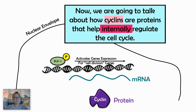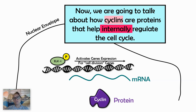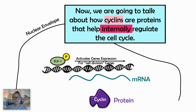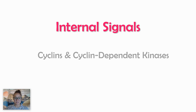To summarize so far: your external signals will be things like growth factors or growth hormone. They attach to a tyrosine kinase receptor, activating internal proteins to bring about a final cell response of turning on gene expression. Those genes produce mRNA that are the directions to build proteins. These are the internal signals — cyclins as well as cyclin-dependent kinases — that help move the cell through the cell cycle.